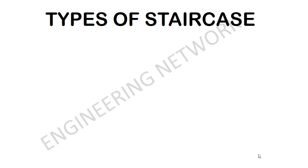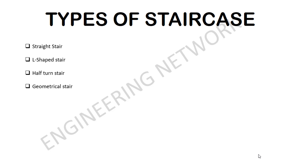The types of stairs used in building construction are broadly based on the shape or layout of the stairs. The different types of stairs commonly used in building construction are: straight flight stair, L-shaped stair, half turn stair, geometrical stair, circular stair, and bifurcating stair. Now I will explain each and every type separately.